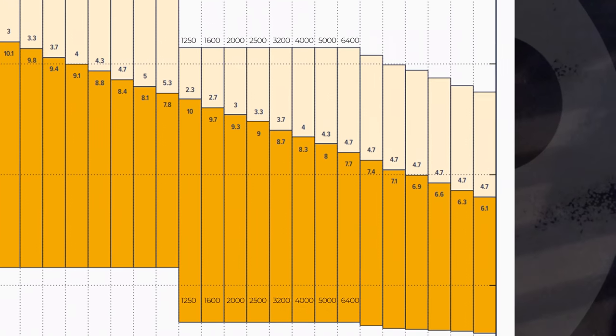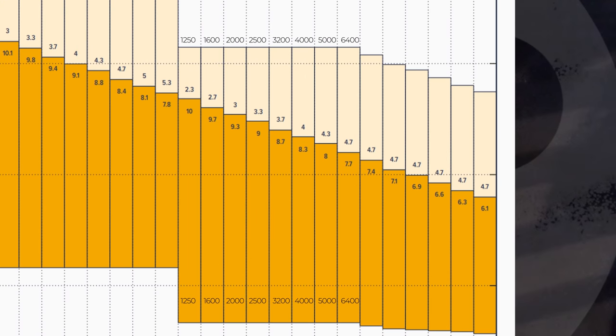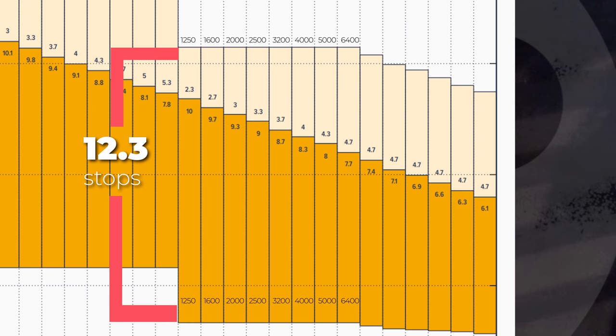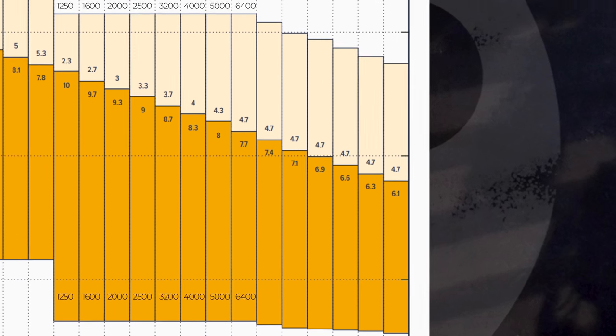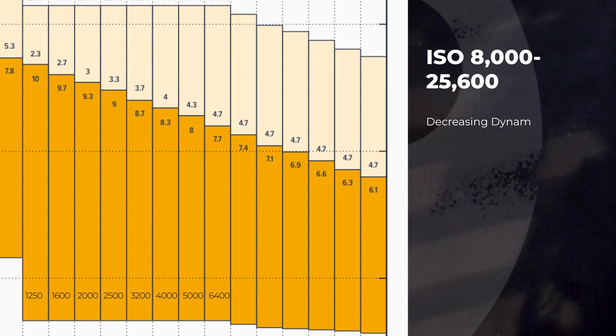The next rectangular area is between ISO 1250 and 6400, this time with 12.3 stops of dynamic range. This represents the new signal path and the additional analog gain applied. And then from ISO 8000 on you see this stair-stepping down and we get decreasing dynamic range — at this point we're just cranking up the analog gain.